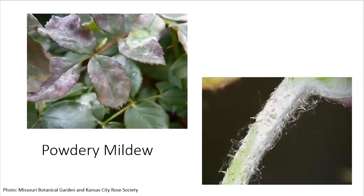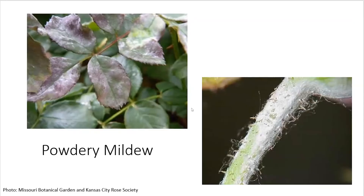The last fungal pathogen we're going to talk about is powdery mildew. Probably many people have already seen it — it's everywhere. It's not hard to identify, but it can be a very serious problem for roses. You can see gray or whitish powdery substances on the surface of the leaf. Over time it will cause the whole leaf to become distorted and curled, and finally it will drop. To control powdery mildew, sanitation is still very important. You can also pick resistant varieties, and if you want to use a chemical method, remember to use fungicides that can control both powdery mildew and the leaf spots.